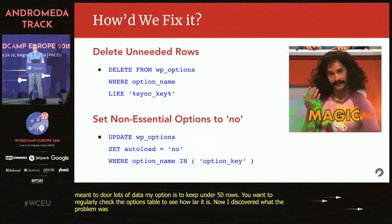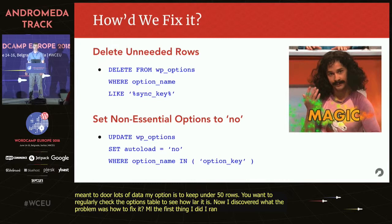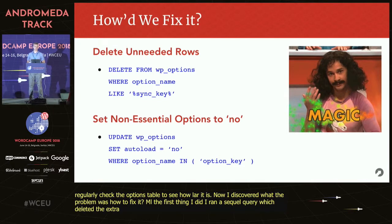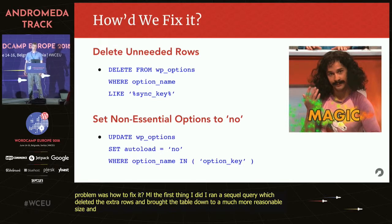Now that I discovered what the problem was, how did I fix it? The first thing I did was run a SQL query which deleted the extra rows that were added from that plugin. This brought the table down to a much more reasonable size and things were able to run a little bit better. Next, I ran another SQL query which updated specific options that didn't need to autoload.